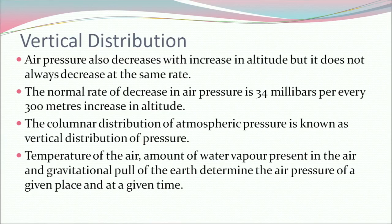Now let's understand the vertical distribution of air pressure. Air pressure decreases with increase in altitude, but it does not always decrease at the same rate. The normal rate of decrease in air pressure is 34 millibars per every 300 meters increase in altitude. The columnar distribution of atmospheric pressure is known as vertical distribution of pressure. Temperature of the air, amount of water vapor present in the air, and gravitational pull of the earth determine the air pressure of a given place at a given time.